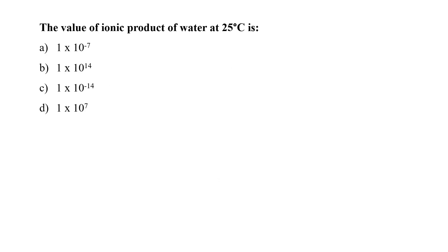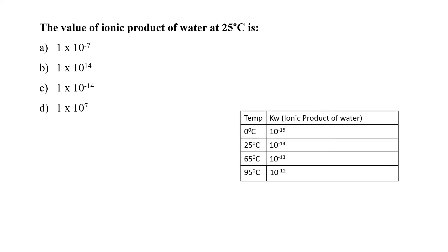The value of ionic product of water at 25 degrees Celsius. Always remember, the ionic product of water is heavily dependent on the temperature. As you can see in the table, the value of ionic product changes as the temperature is increased. And hence, at 25 degrees Celsius, this value comes around as 10 to the power minus 14, which is close to option C.